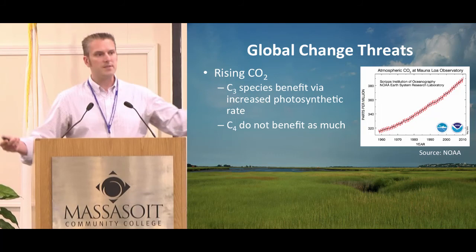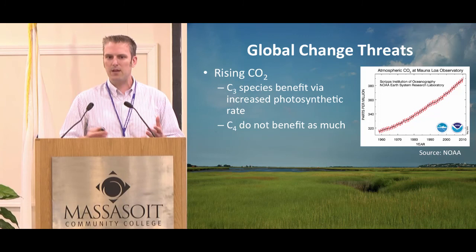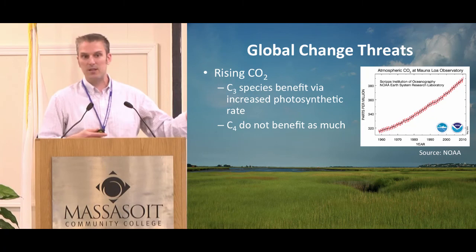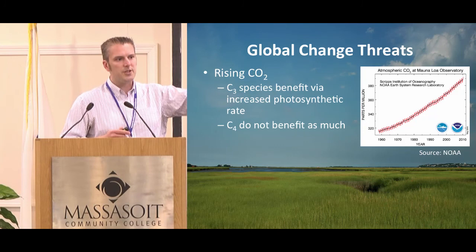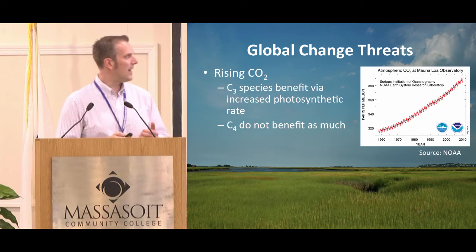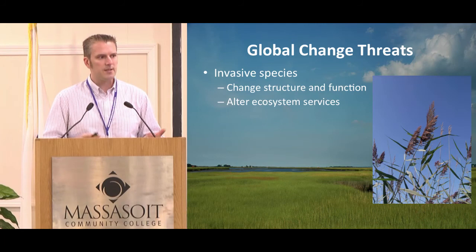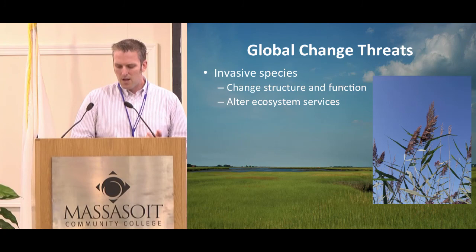In tidal systems we have C3 species and C4 species. C3 species — forbs, sedges, and certain grasses like Phragmites australis — respond positively to elevated CO2 by increasing photosynthetic rates, whereas C4 plants don't necessarily respond. This creates a trade-off where certain species respond to one global change factor and others to another. Adding invasive species further complicates things by completely changing ecosystem structure, function, and services.